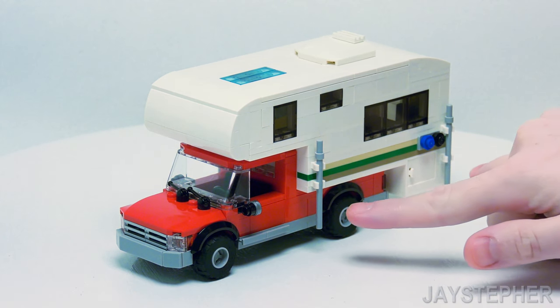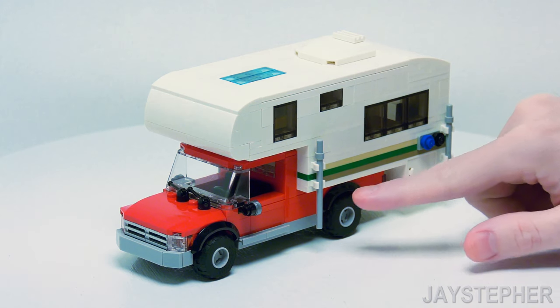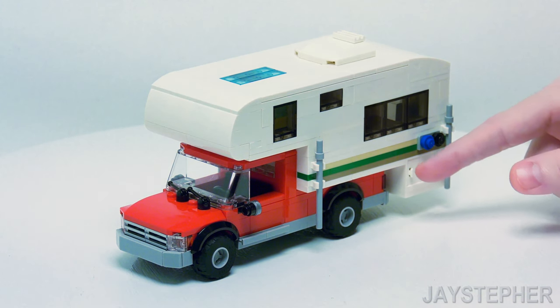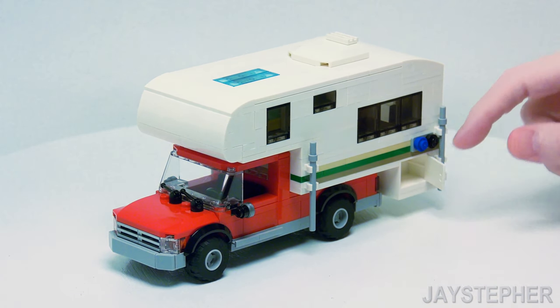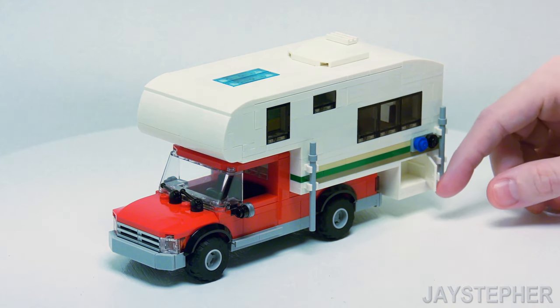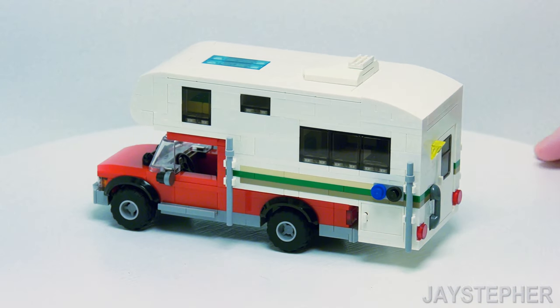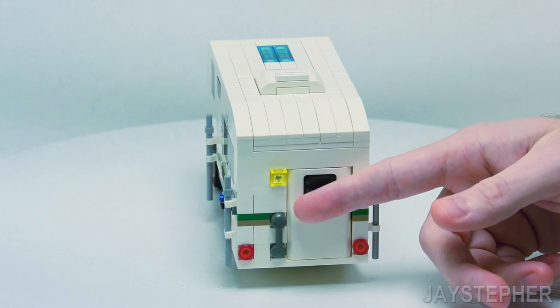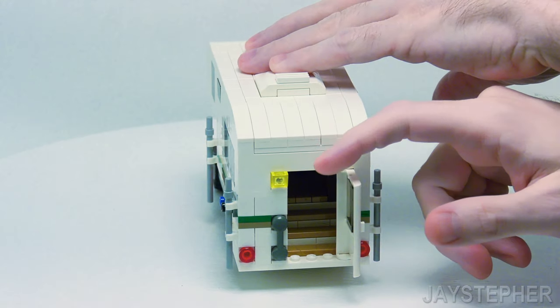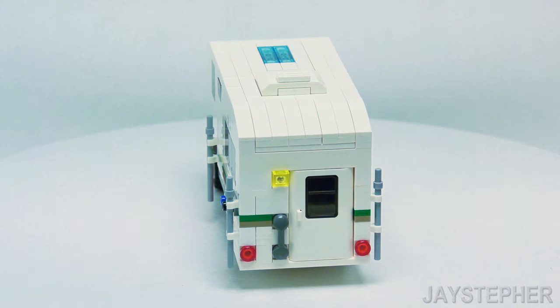So here we have the stabilizer leveling jacks. I'm not sure what these are called. We've got our hookups and a cabinet for storage. It doesn't have anything in it, so you can put a propane tank in there. Here's the rear entry. This door does open up. We'll take a look at the interior in a bit. We've got our handle and a light.